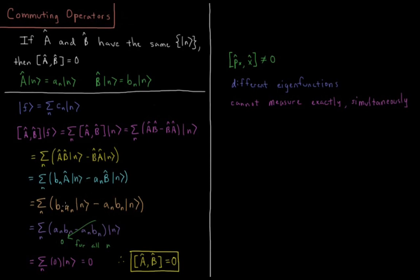Notice that a and b are both scalar values. Multiplication of scalar values is commutative. So when we factor this out, we have aN N, bN N, minus aN N, bN N, which is equal to bN N, aN N. So this value in parentheses here is equal to zero, and this is zero for all values of N.